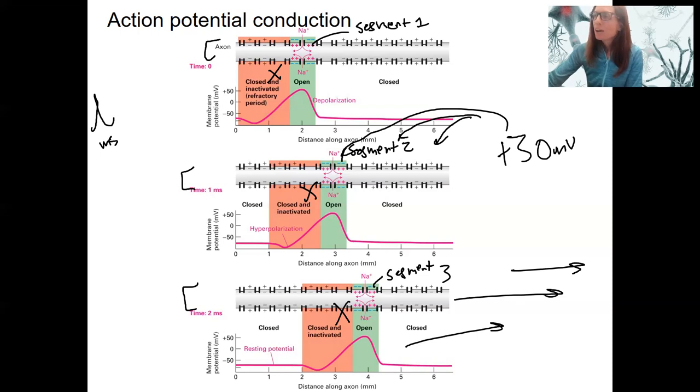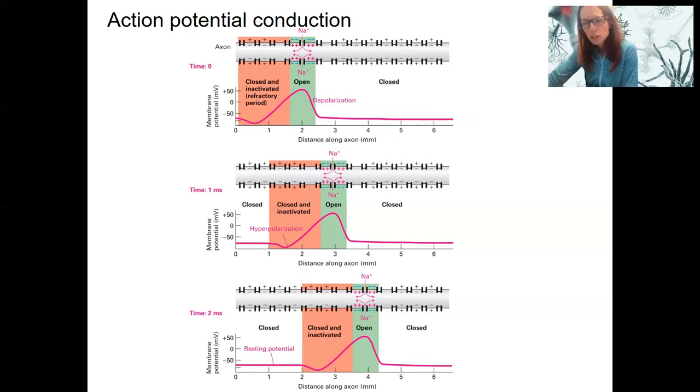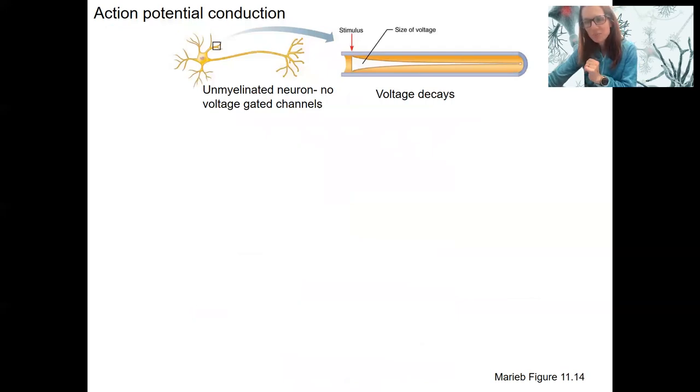The other part about conduction. We now have another factor called myelination. So if we want conduction to happen faster, there's two different things we can do. One is increase the diameter of the axon itself. So diameter will change flow. But we're going to be talking about myelination, which you already know what myelin is. It's insulation.